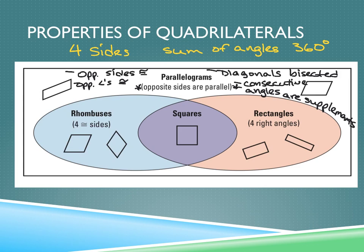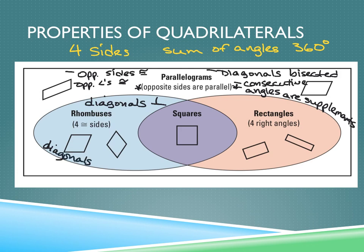Next, we're going to cover the properties of rhombuses. Remember, rhombuses have all of the properties of parallelograms and the general properties of the quadrilateral. What's specific about rhombuses is their diagonals are perpendicular. We also know that the diagonals bisect opposite angles. And that's specific to rhombuses.